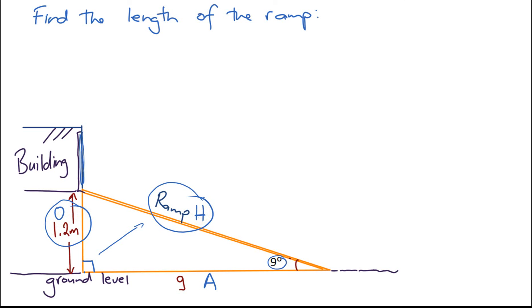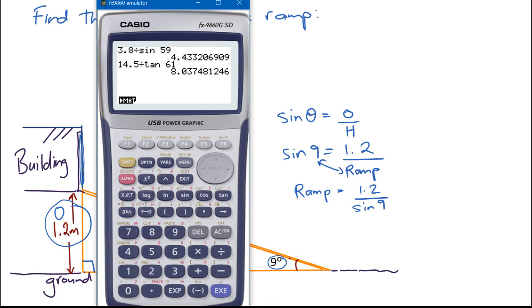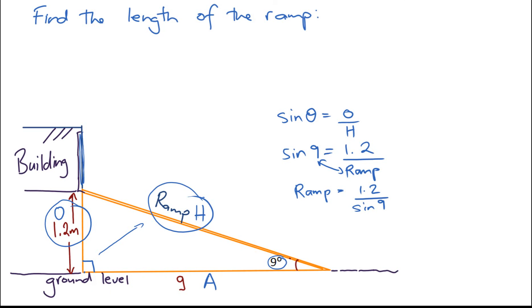We're dealing with O and H, so the ratio we're using is sine theta equals O over H. We know the angle — it's 9 degrees. The opposite side is 1.2 meters divided by the length of the ramp. Our unknown length is on the bottom, so we swap these two around. Ramp is equal to 1.2 divided by sine of 9, which equals 7.7 meters. So the ramp is 7.7 meters.